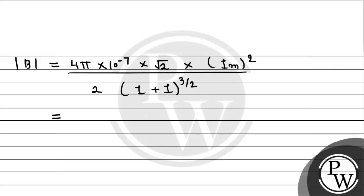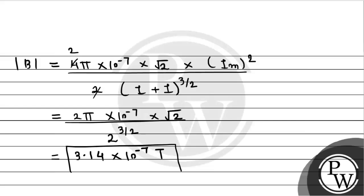So √2 times √2 gives us 2, and 2 times 4 gives us 2 times 2 equals 4, so we get 2π times 10 to the power minus 7 multiplied by √2 times 1 divided by 2 to the power 3/2. Further simplifying and solving this, this comes out to 3.14 times 10 to the power minus 7 tesla. This is our required answer for this question.